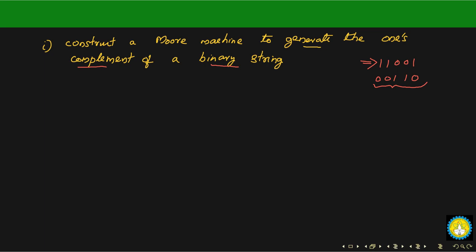Let's look at how it can be designed. We start with the starting state q0. From q0 we have to define two transitions: one on zero and one on one. If I see a one in my input string, I output zero. If I see a zero in my input string, I output one — that will be defined at state q1. At q1 I'm going to output one.